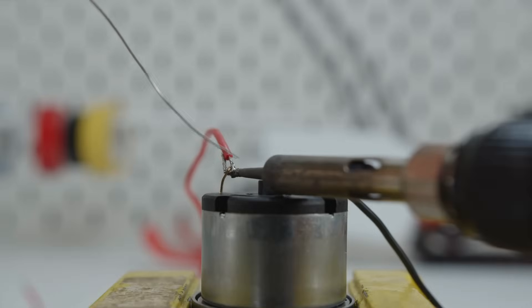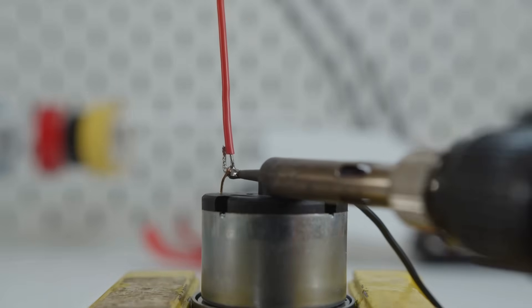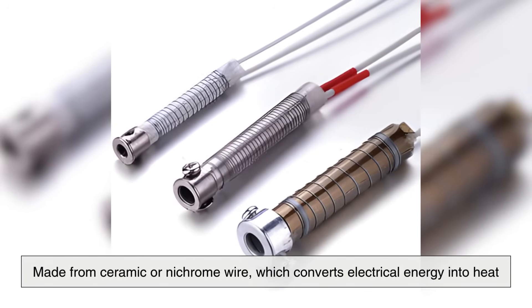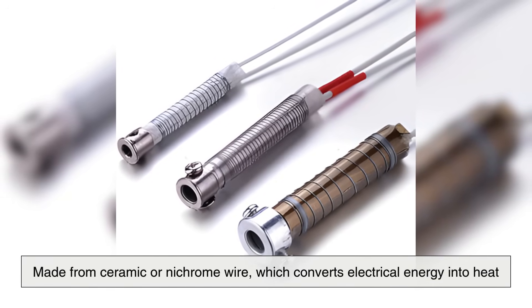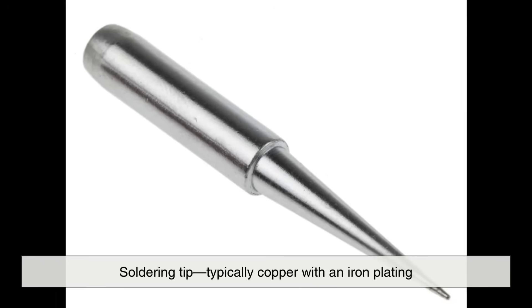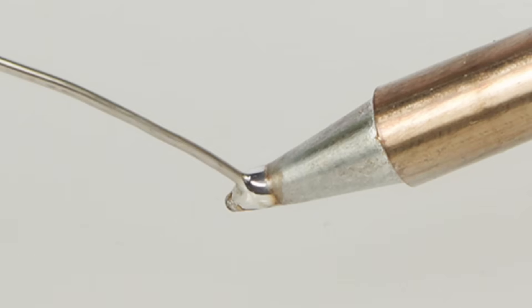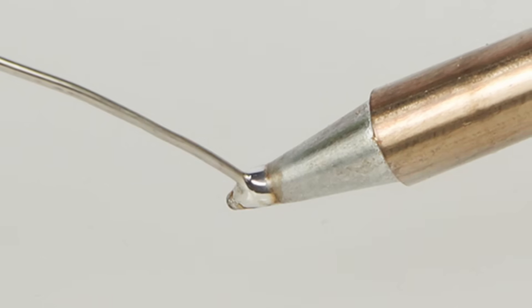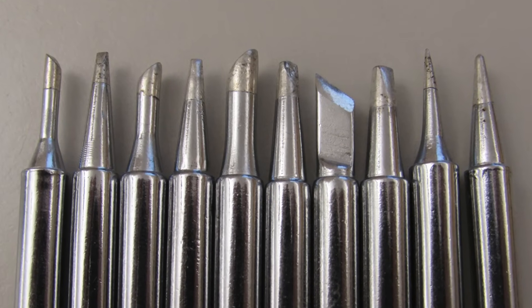To understand how a soldering iron works, we need to look at its components. First is the heating element, usually made from ceramic or nichrome wire, which converts electrical energy into heat. Surrounding that is the soldering tip, typically copper with an iron plating, which conducts the heat to your workpiece. This tip is shaped in different forms depending on the job.